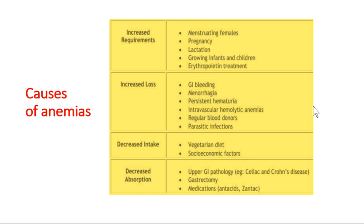The second category is increased loss. During GI bleeding, disorders like ulcerative colitis and Crohn's disease can cause bleeding. If clotting factor mechanisms are not working or there is platelet deficiency — for example in dengue fever — bleeding can occur. Menorrhagia, persistent hematuria due to kidney disorders causing RBC loss in urine, intravascular hemolytic anemias, regular blood donation, and parasitic infections are also causes.